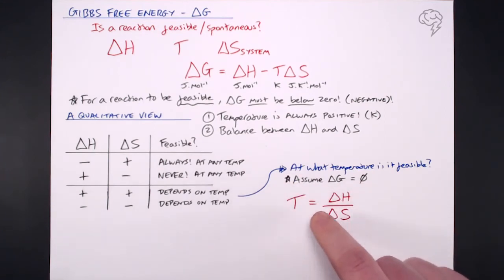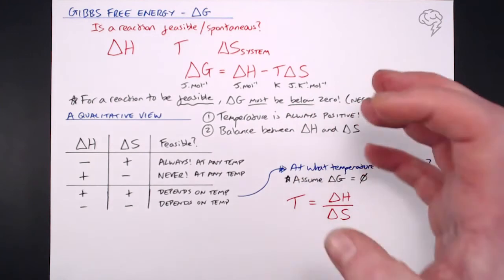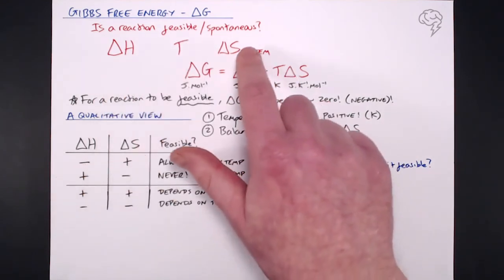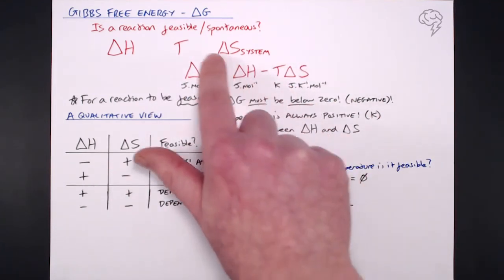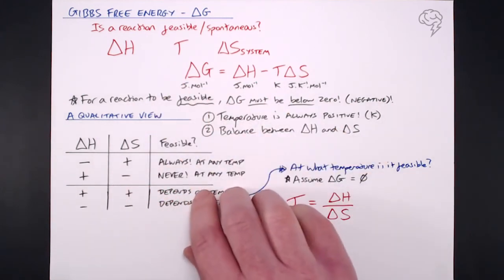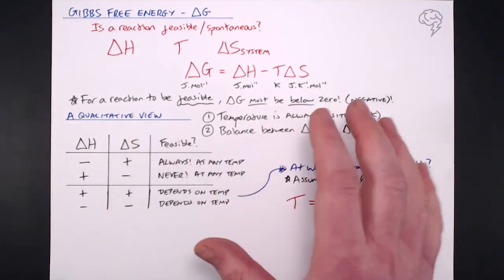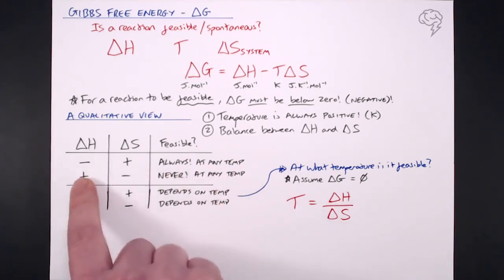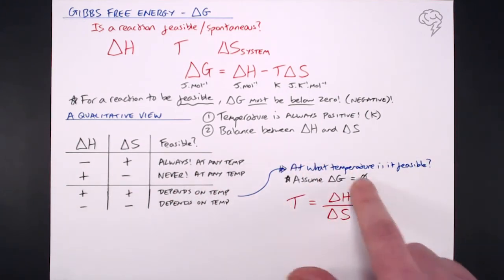Overall, delta G is the biggest indication we have of whether a reaction is going to be feasible or not — it takes into account enthalpy, temperature, and entropy. The main equation is delta G = delta H − TΔS, and everything must be in joules. If delta G is negative, the reaction is feasible. One sign combination is always feasible, another is never feasible, and if both signs are the same, temperature determines the outcome.